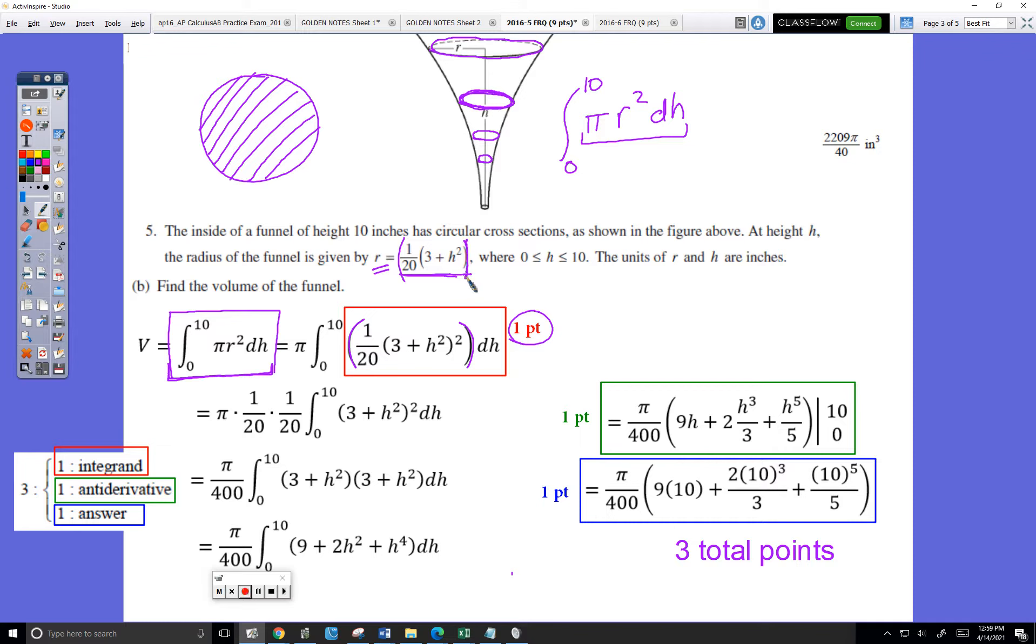So that's a typo in their work. This square needs to be here because it's the entire radius being squared. That's one point.